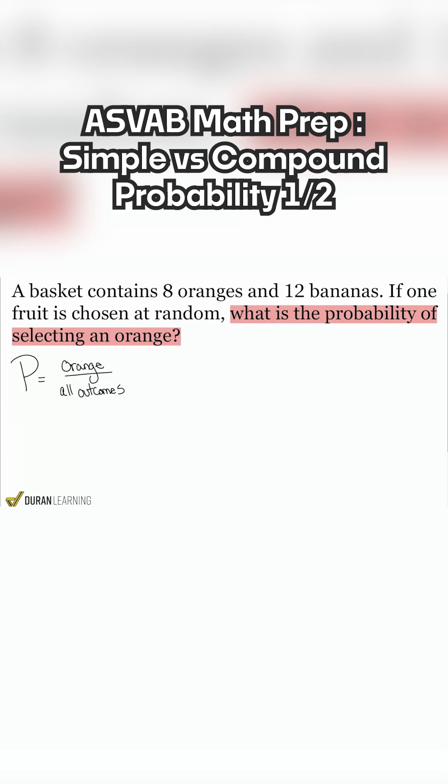So if we take a read, it says a basket contains 8 oranges and 12 bananas. We're going to choose one fruit at random. What's the probability of selecting an orange? Okay, sounds good.